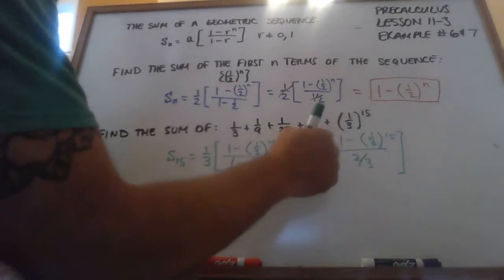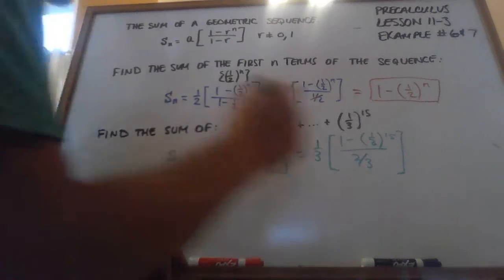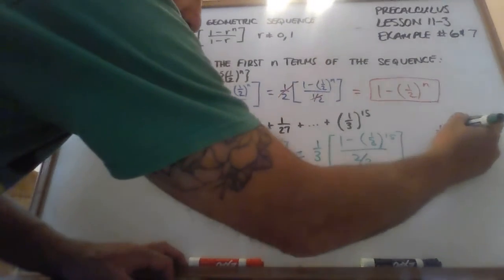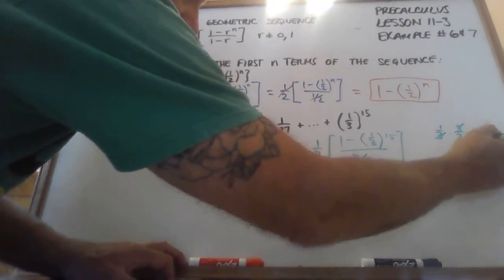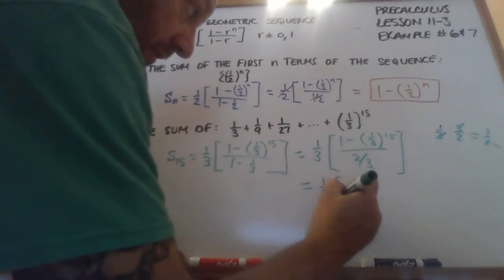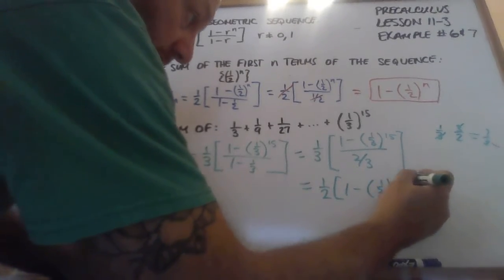Okay, so if I take this and I invert and multiply it, because that's what we do when we divide by fractions, I get 1 third times 3 halves. The 3's cancel out and I get 1 half. So this equals 1 half times 1 minus 1 third to the 15th power.